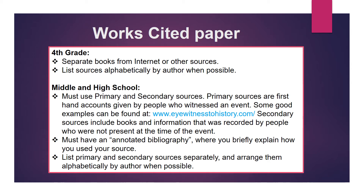For middle and high school, you must use primary and secondary sources. Primary sources are first-hand accounts given by people who witnessed an event. Some good examples can be found at www.eyewitness2history.com. Secondary sources include books and information recorded by people who were not present at the time of the event. You must have an annotated bibliography where you briefly explain how you used your source. List primary and secondary sources separately and arrange them alphabetically by author when possible.